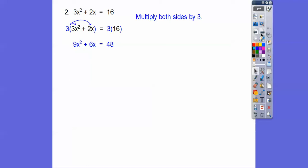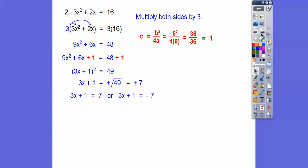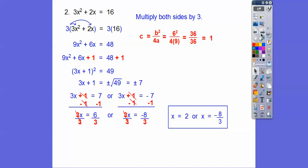And then square root, don't forget your plus or minus. So 3x plus 1 equals 7 or negative 7. Subtract 1, divide by 3, and there you go.